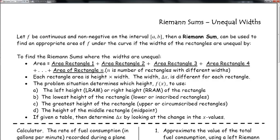If you want to find the area, you add up all the individual rectangles. Area of rectangle 1, area of rectangle 2, area of rectangle 3. This is going to be the sum of all your rectangles, finally plus the area of rectangle N. And N is the number of rectangles with different widths.